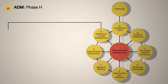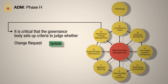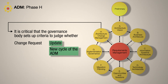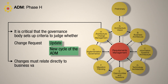In Phase H, it's critical that the governance body sets up criteria to judge whether a change request warrants a simple architecture update or whether it requires starting a new cycle of the architecture development method. It's important to avoid creeping elegance, so changes must relate directly to business value.